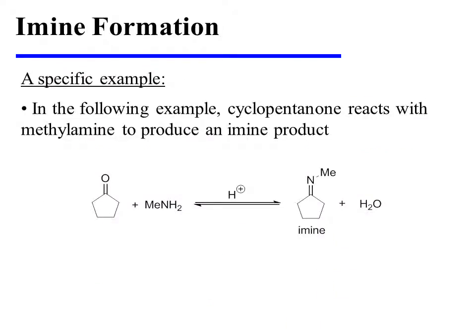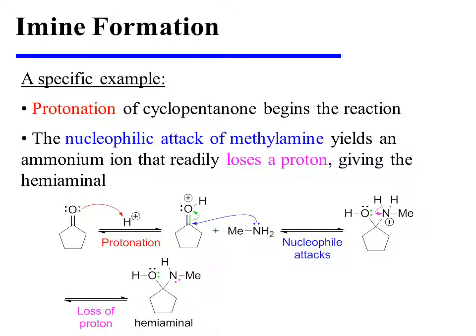In this specific example, cyclopentanone is treated with methylamine in the presence of catalytic acid in order to form an imine. If we drive off water during this reaction, the equilibrium will be pushed toward the imine. That imine is formed through the initial protonation of cyclopentanone on the carbonyl oxygen. Methylamine then attacks the carbonyl carbon, displacing the carbonyl pi-bonding electrons onto oxygen. The ammonium ion thus formed loses a proton, forming the hemi-aminal.